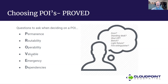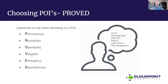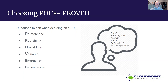V — Valuable. How valuable is it? The more valuable something is, the more likely I'm going to include it as a point of interest. With indoor mapping and facility management, we're trying to save time and money and maximize our investment. If I've got tens of thousands of dollars in a piece of equipment, I want that as one of my POIs.